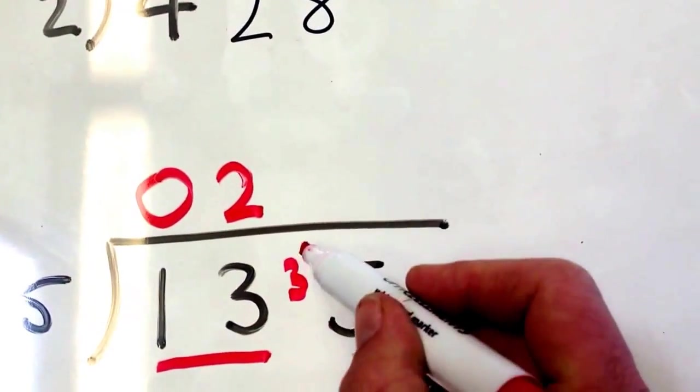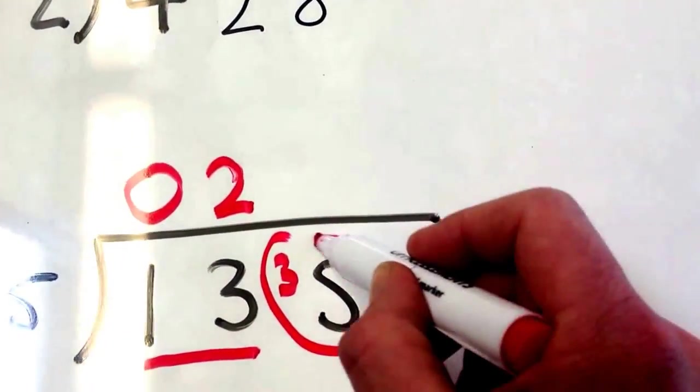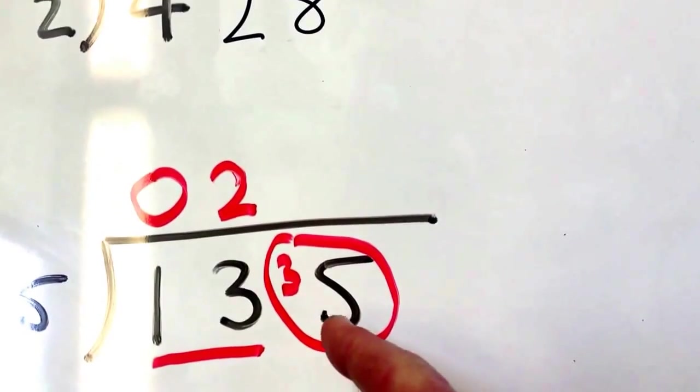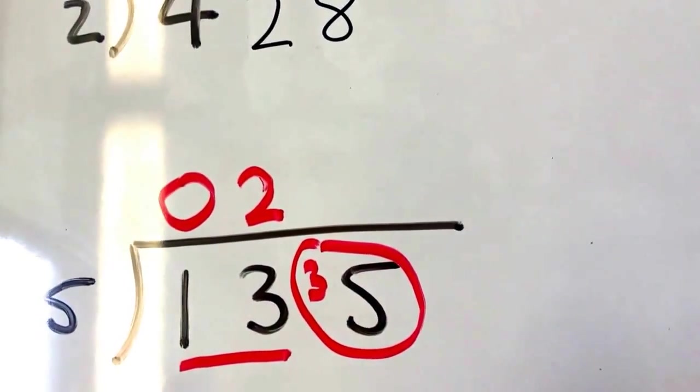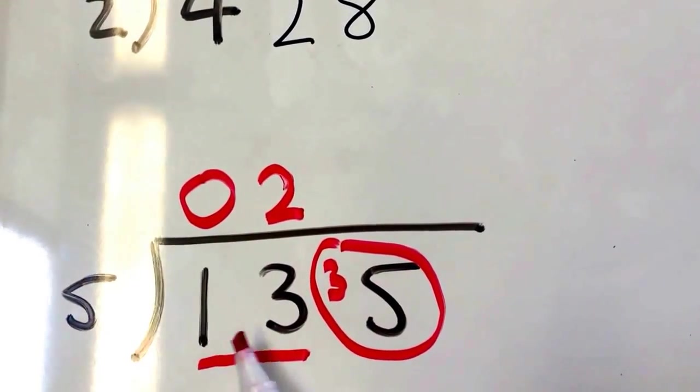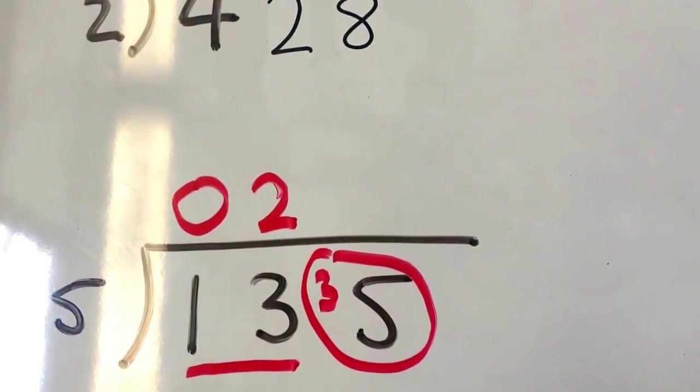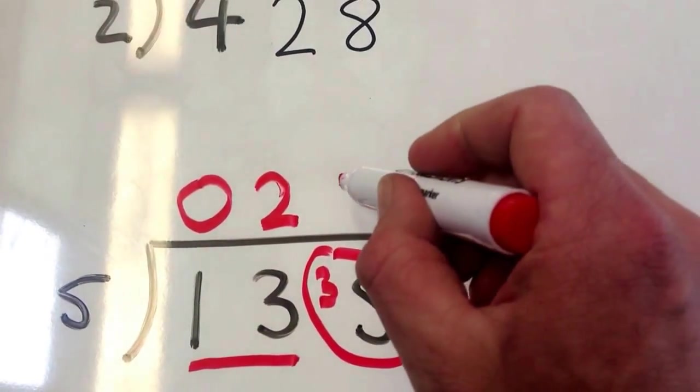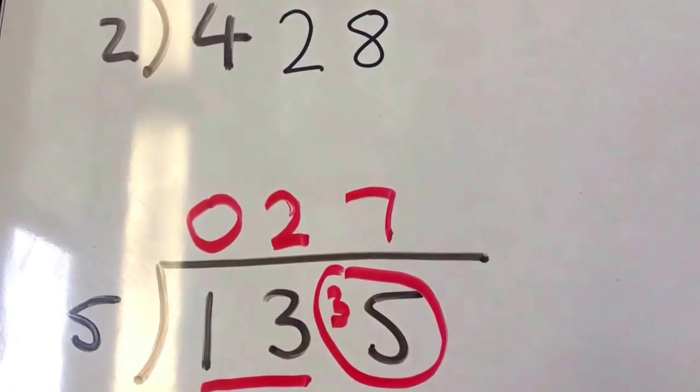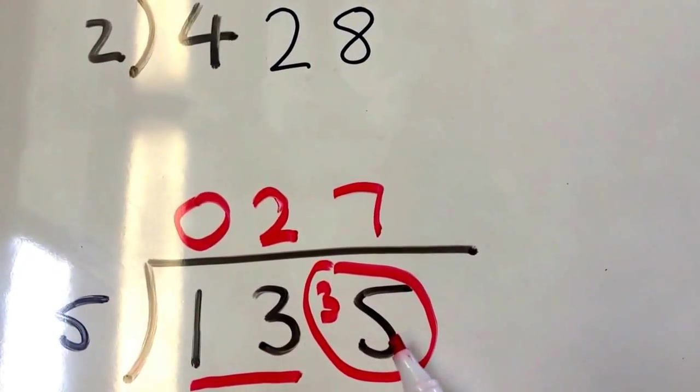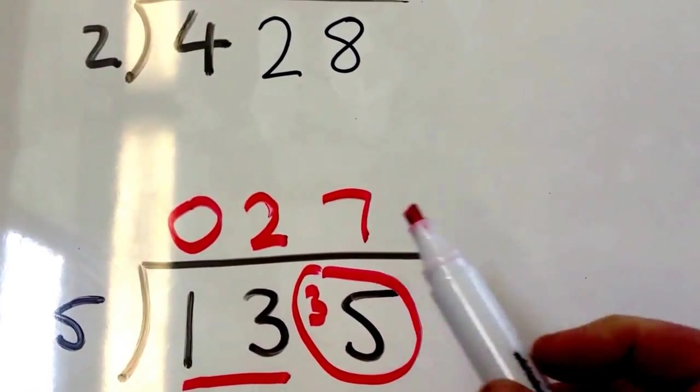So now we look at these two numbers together and make that 35. Now we say, how many times does 5 go into 35? 5 goes into 35, knowing our basic facts, 7 times. 5 times 7 is 35. So the answer to 135 divided by 5 equals 27.